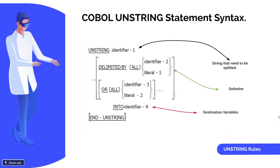The COBOL Unstring Statement syntax is fairly simple and easy to understand. There are three important points to keep in mind. First, the unstring statement starts with the UNSTRING keyword followed by identifier one, where you pass the actual string field that needs to be split into multiple fields. Next is DELIMITED BY, where you specify the delimiter — for example, a space if you want to split David Murphy into first name and last name.